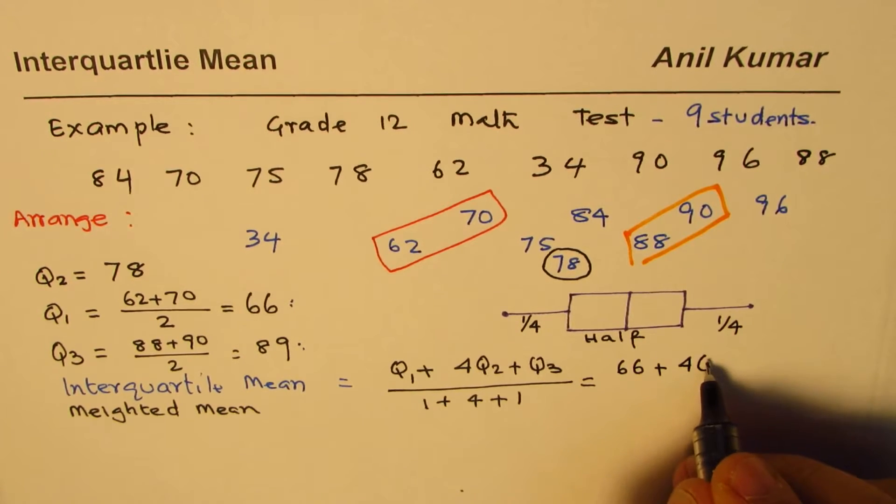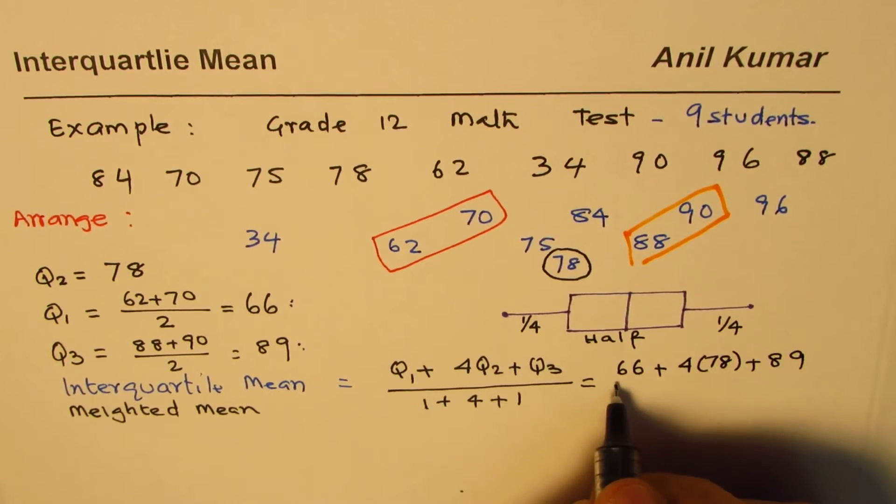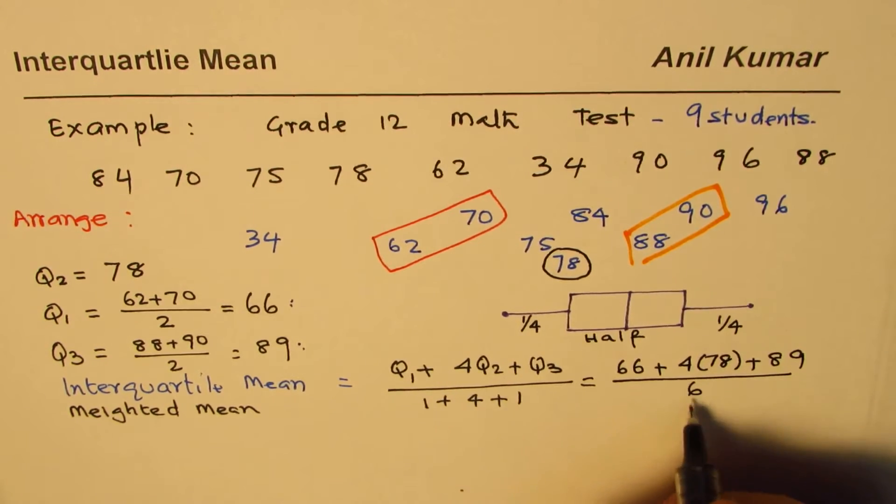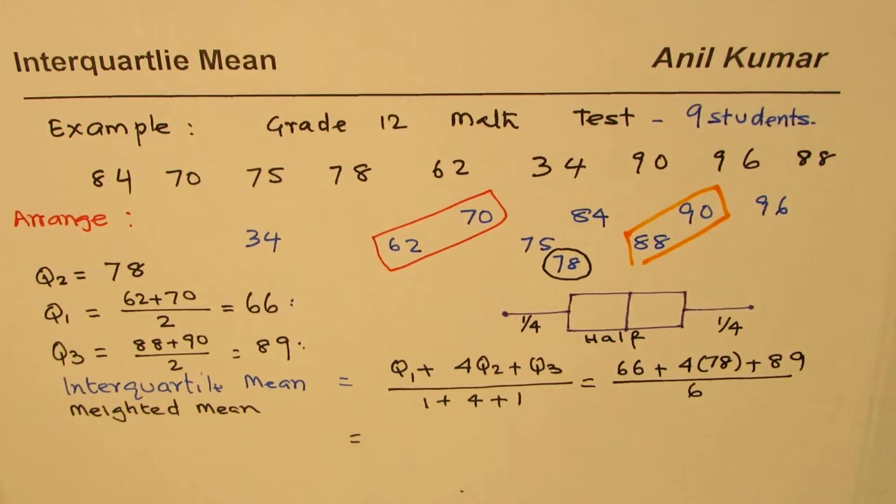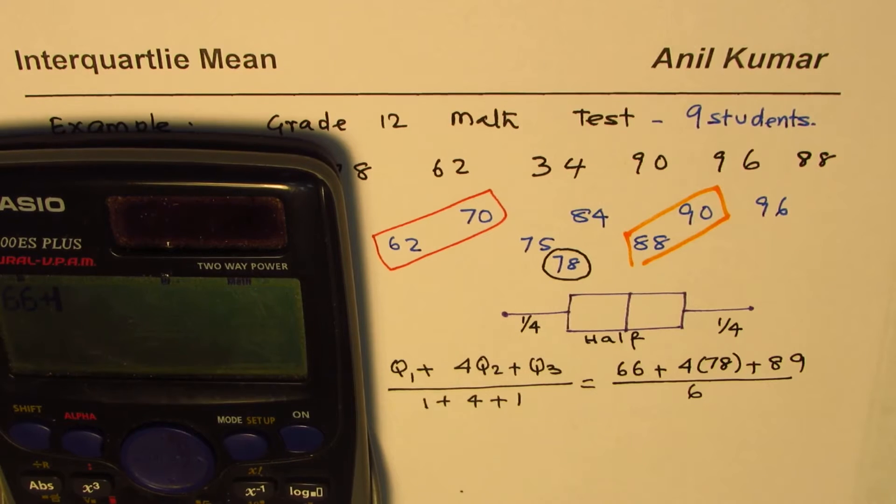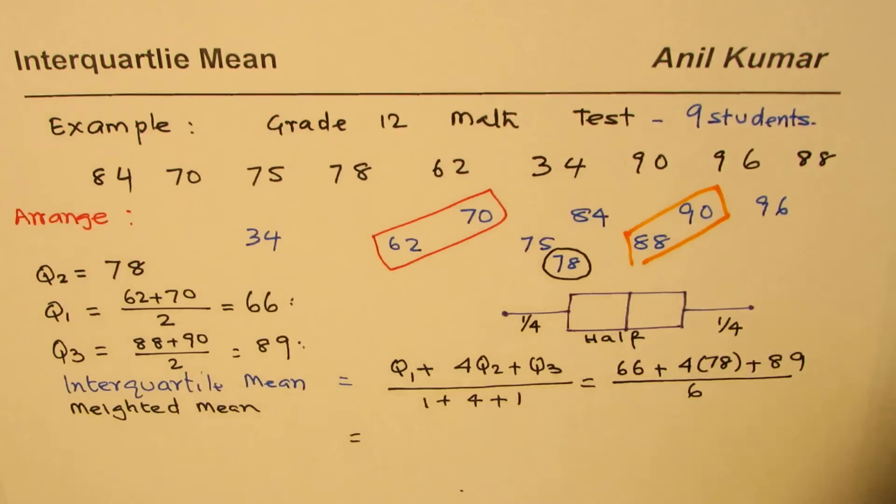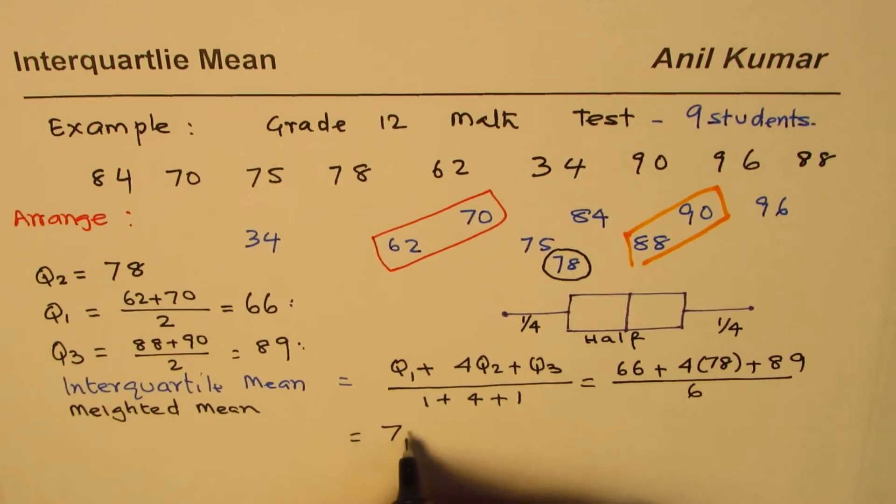That gives us the answer. So let's calculate the value: 66 plus 4 times 78 plus 89 divided by 6 equals, in decimals, 77.83.